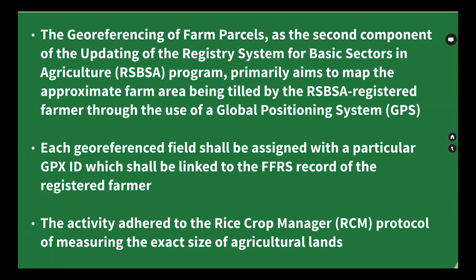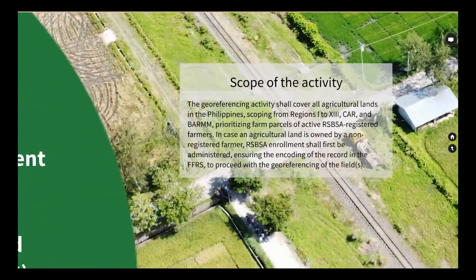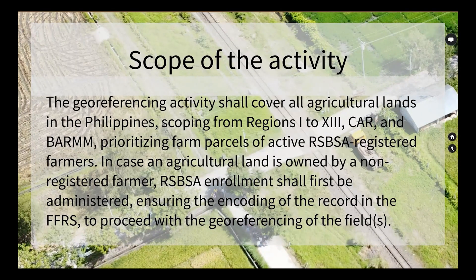This is done through the use of a Global Positioning System (GPS). Each geo-referenced field shall be assigned with a particular GPX ID, which shall be linked to the FFRS record of the registered farmer. The activity also adheres to the Rice Crop Manager (RCM) protocol of measuring the exact size of agricultural lands.